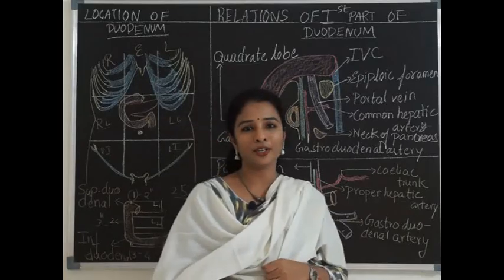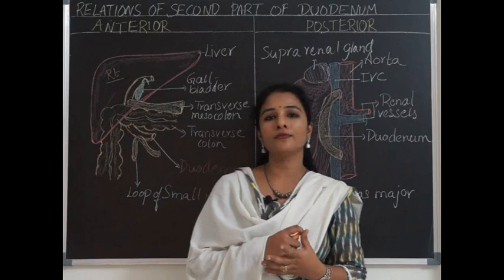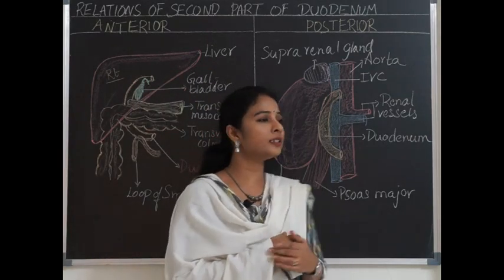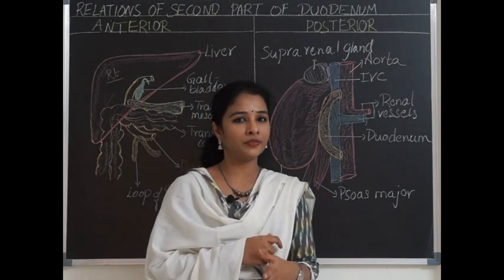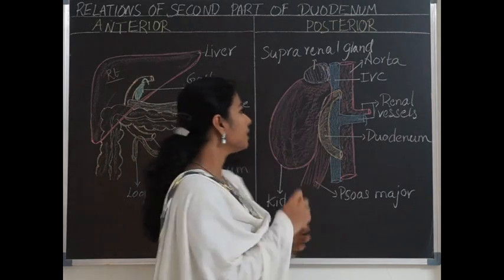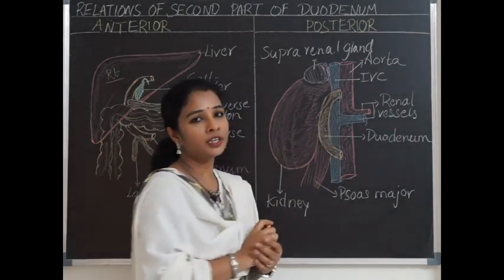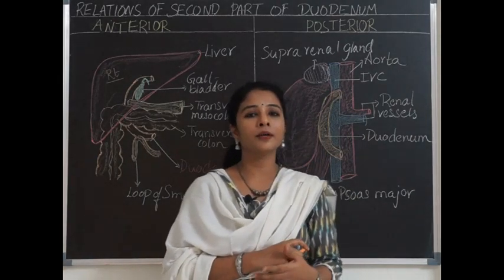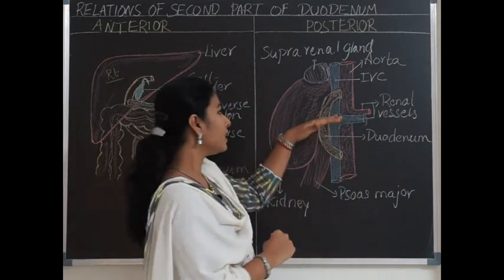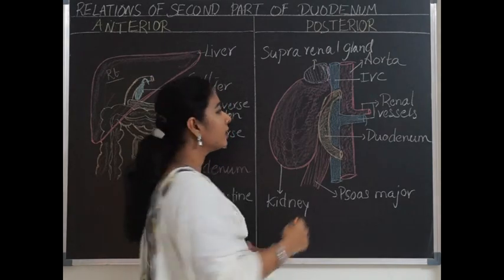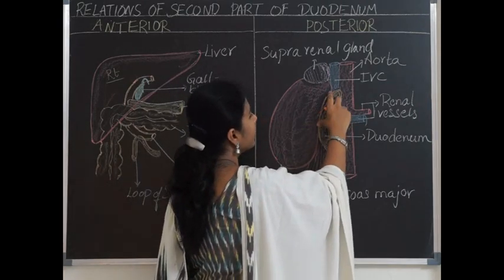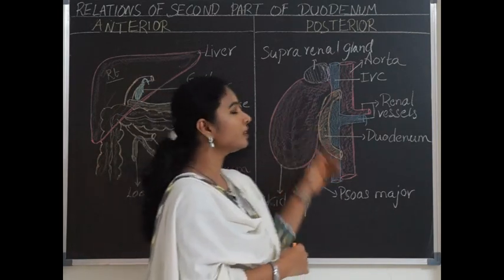The second part of duodenum is approximately 3 inches — around 7.5 centimeters — in length. It is the vertical part of the duodenum, present on the right side in the abdomen, extending between the superior duodenal flexure and inferior duodenal flexure. Embryologically, inside the duodenum there is an opening called the major duodenal papilla, which divides the duodenum into the upper proximal half developed from the foregut and the lower half developed from the midgut.